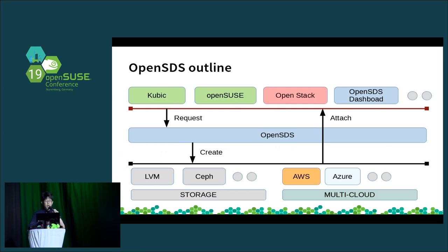I return the talk to OpenSDS. It takes on this outline when I map the SDS model to OpenSDS. OpenSDS has a northbound plugin project named Sushi. This provides how systems join OpenSDS. Sushi provides CSI and service catalog for Kubernetes, and a Cinder-compatible API for OpenStack. OpenSDS also has a command line interface and dashboard.